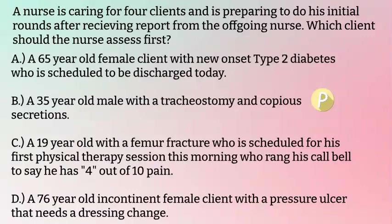Option C: a 19-year-old with a femur fracture who is scheduled for his first physical therapy session this morning, who rang his call bell to say he has four out of ten pain. Option C is one of those pain options we need to evaluate. We already have a physiologic choice related to airway. The only way this would become our priority is if the pain is related to loss of limb or loss of life. This is a patient with a femur fracture, so we would expect him to have pain. It is not related to loss of limb or loss of life. Therefore, B remains our priority.